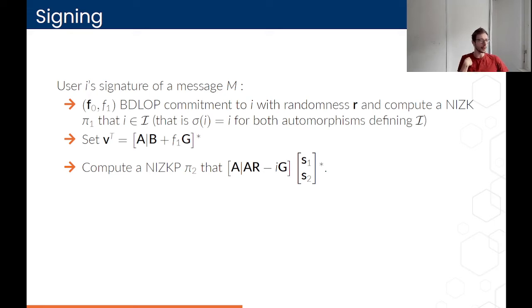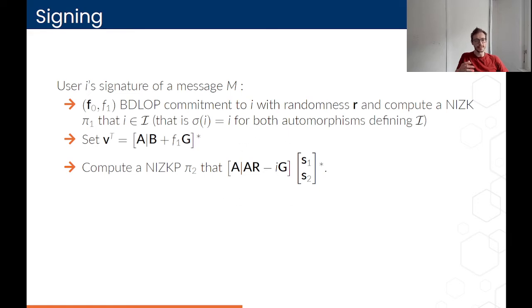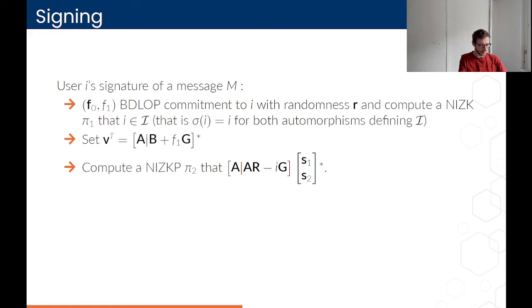The second part of the signature is a proof of knowledge of the secret key S1_i, S2_i — a proof of knowledge of a short solution of the signing equation. In 2018, this couldn't be done directly, and so it's rather more complicated than what we can do today.